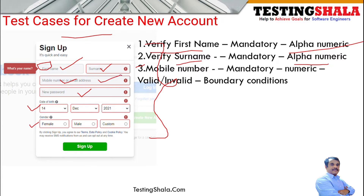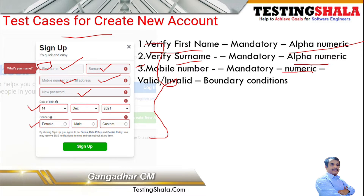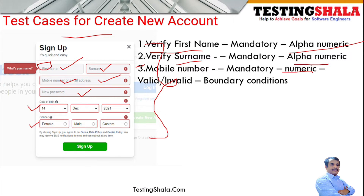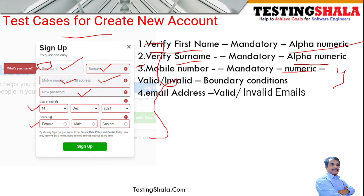The third validation is for the mobile number. If the user gives a mobile number as input, it can only take numeric values, and only valid 10-digit numbers should be accepted — it may also be associated with the country code. You should test various boundary conditions: giving 7-digit, 8-digit, 11-digit numbers, or different characters apart from digits, and verify how the field behaves in each case.